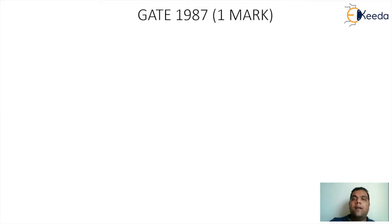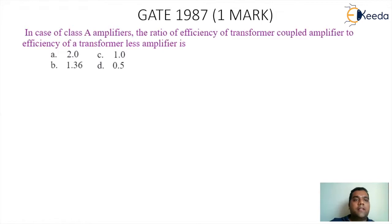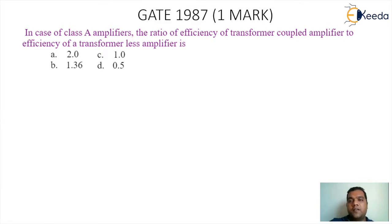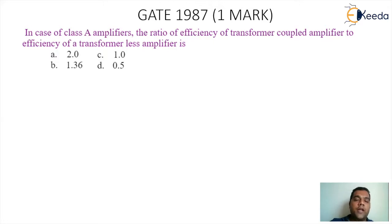This is from the GATE 1987 paper. In case of class A amplifier, the ratio of efficiency of transformer coupled amplifier to efficiency of a transformerless amplifier is what value? So here we are going to take a ratio of the efficiencies — the numerator will be the efficiency of a transformer coupled amplifier, and the denominator will be the efficiency of a transformerless amplifier.